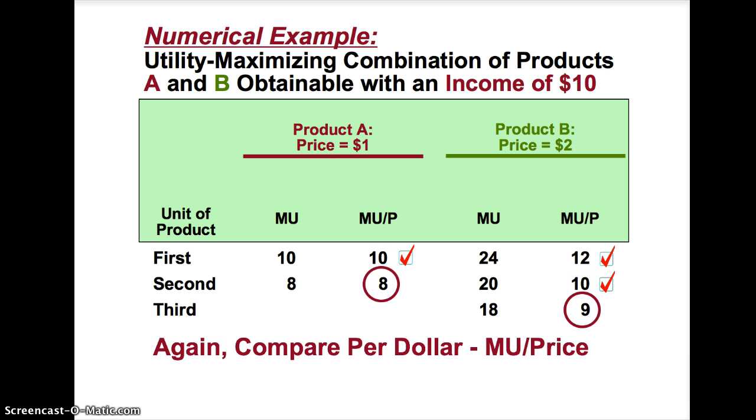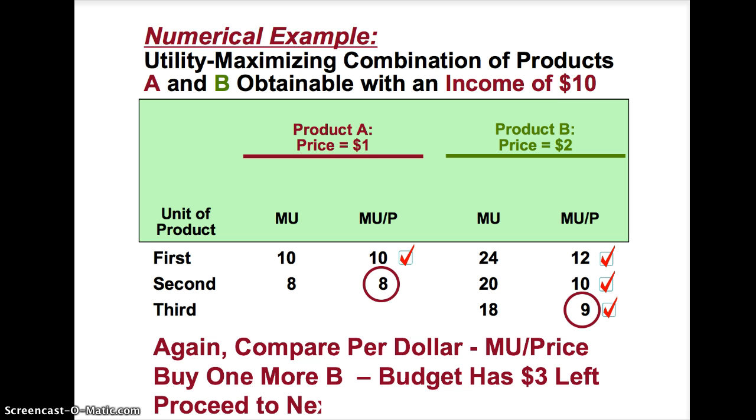The third unit of product B yields a marginal utility of 18. Therefore, marginal utility per dollar is 9. The second unit of product A yields a marginal utility of 8. Therefore, marginal utility per dollar is 8. The consumer will purchase the third unit of product B.